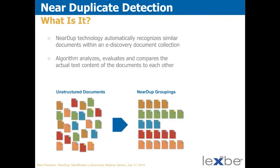First, what is near-duplicate detection? This is the process of recognizing similar documents within an eDiscovery document collection. One thing to distinguish: there's another concept called exact duplicates, which are documents that are electronically exactly the same — for example, a Word document that's uploaded and then uploaded again with no change whatsoever. If somebody opened a document and changed one letter, or sometimes even just opening it changes the document enough that it wouldn't be an exact duplicate. Systems and services have ways of getting rid of exact duplicates, and that's been common for a while.